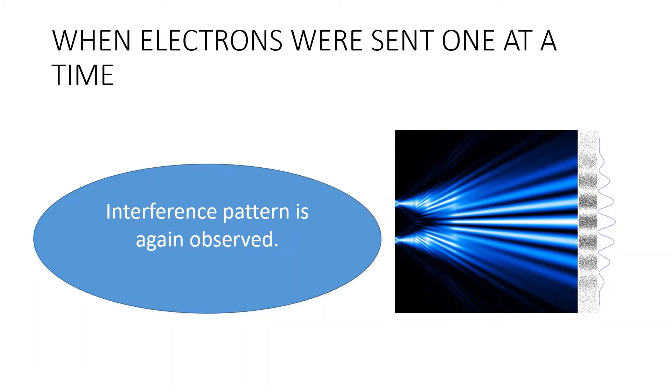The most weird thing happened when we sent electrons one at a time through the slits. Again, the interference patterns are observed in the screen. The implication seems to be that each particle passes simultaneously through both slits and interferes with itself. This combination of both paths at once is known as superposition state.